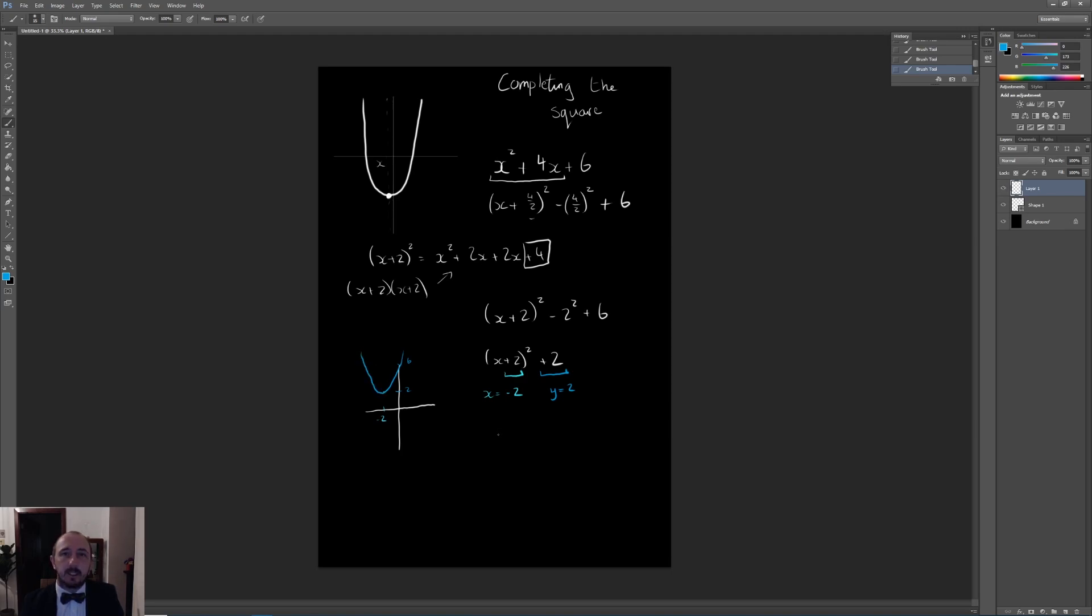So completing the square has allowed us to find the minimum point at negative 2, 2. The equation of symmetry would just be a line going through here. x equals negative 2 is the line of symmetry, the line of symmetry of the graph. So that's in essence what you have to be able to do for completing the square.